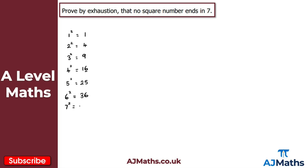Continuing: seven squared is 49, eight squared is 64, nine squared is 81, and ten squared is 100. Looking at the final digits of each of these square numbers, we have: 1, 4, 9, 6, 5, 6, 9, 4, 1, and 0.